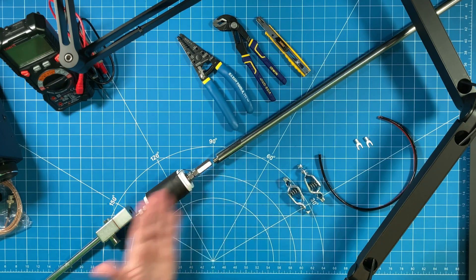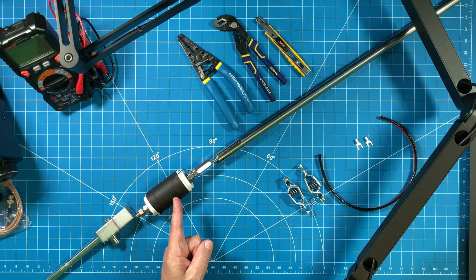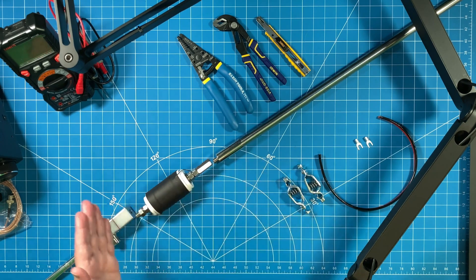You can get to 20 meters by disassembling this, taking the Sporty 40 out, and then putting your whip antenna back into the ground spike.